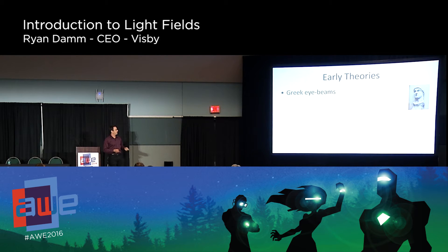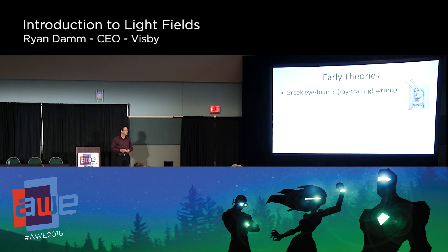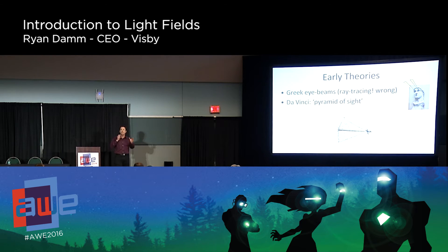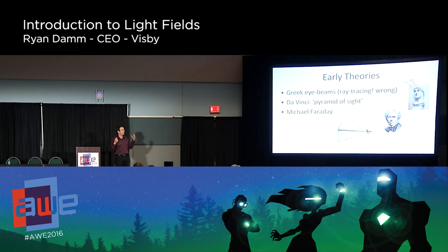Light fields are not actually that new of an idea. We've got to think back to the history of how people think about seeing, vision, and light. If you go all the way back to the Greeks, some philosophers believed we see by having light rays shooting out of our eyes — not correct, but kind of fun. Then da Vinci and Renaissance artists started to understand the geometry of sight. The first person who really discussed light fields was an English physicist named Michael Faraday, who was filling in for a talk — probably not unlike this one — about light fields in general.